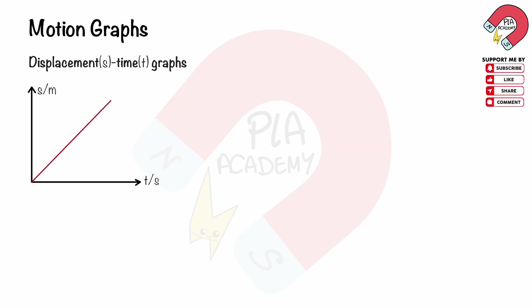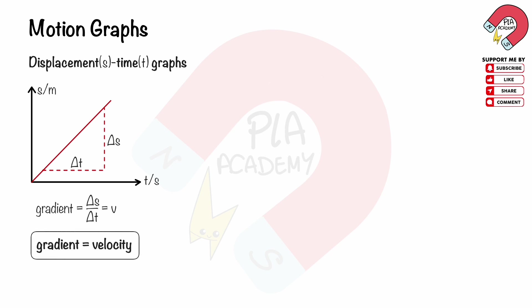Displacement-time graph: its gradient is change in displacement over change in time, which is equal to velocity. So the gradient of a displacement-time graph is velocity, while the area under the graph does not have a physical meaning.